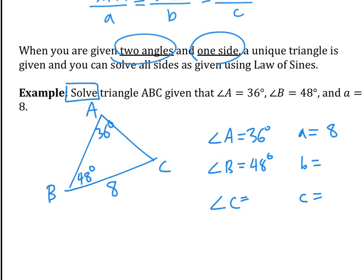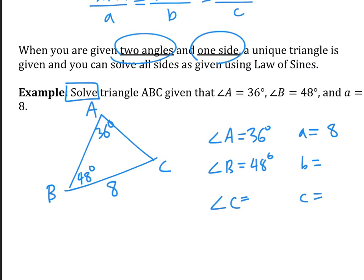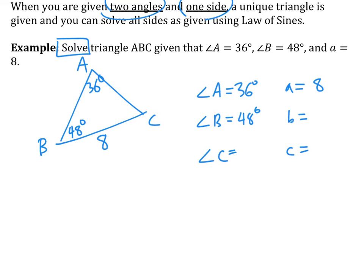If you want to use the Law of Sines, there must be a pair of angle and its opposite side that is known. If there isn't, then you can't use the Law of Sines. Is there a pair we know? Yes — angle A and side a. So we can say sine of 36 degrees over 8 is equal to any of the other pairs we want to choose from.